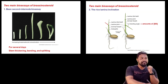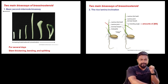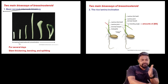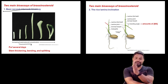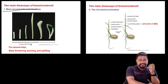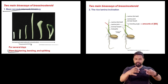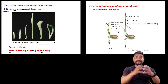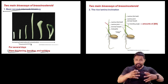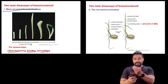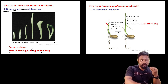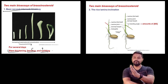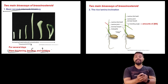The bioassay for brassinosteroids: increasing brassinosteroid concentration causes stem bending, splitting, and thickening because of cell division and growth. It also helps with vascular tissue differentiation and xylem flow differentiation.